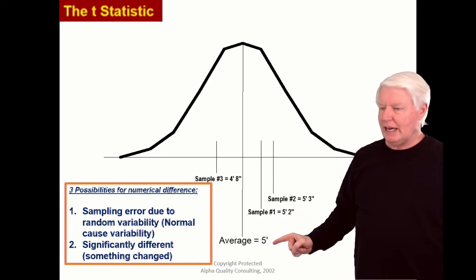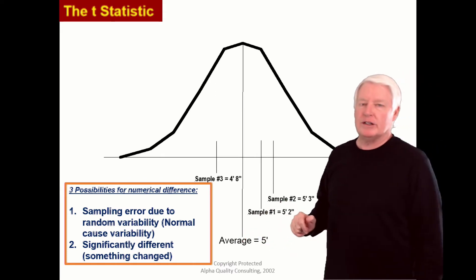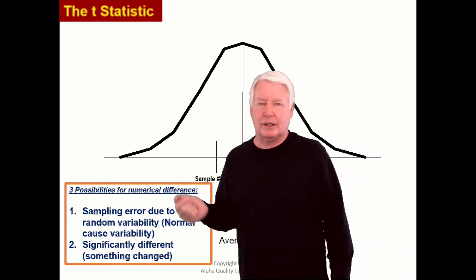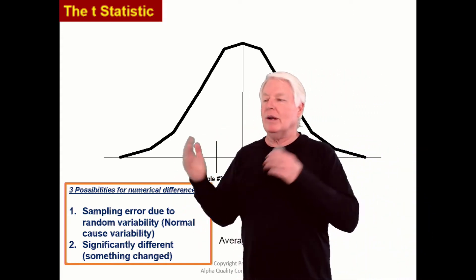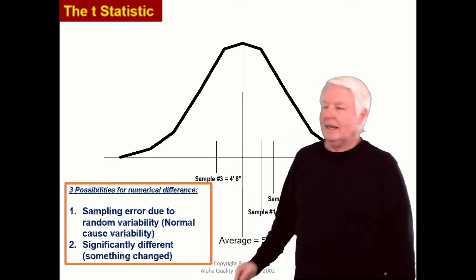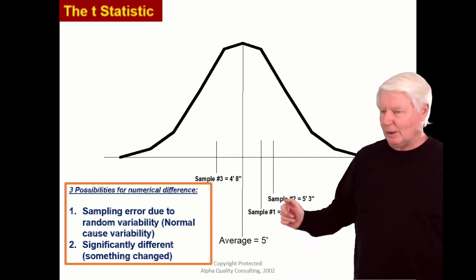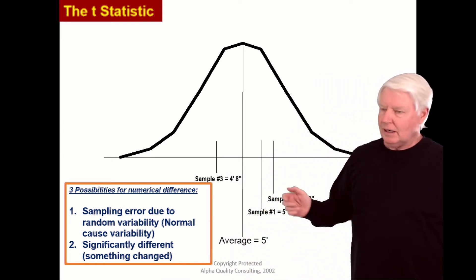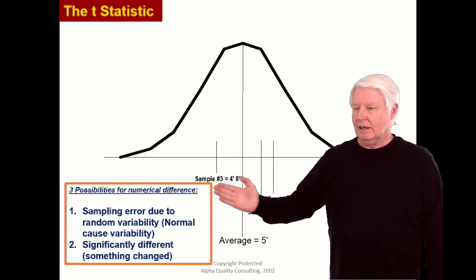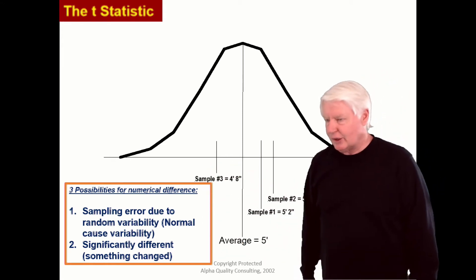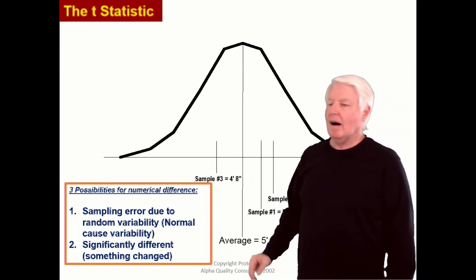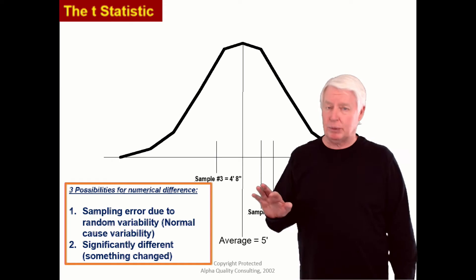The population average was five foot. Oh no, the sample is five foot two. The people are growing taller but the king wants them to get shorter. So you go out in desperation and get another sample that's five foot three. You get another sample that's four foot eight. But all you're dealing with here is sampling error.